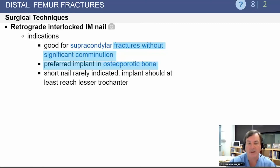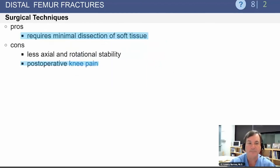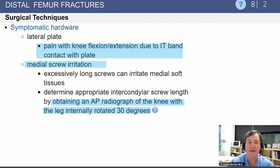Retrograde interlocked nails are good for supracondylar fractures without significant comminution and can be used in osteoporotic bone. They require minimal dissection of soft tissue. However, a con is that some of these patients will have knee pain from the approach.